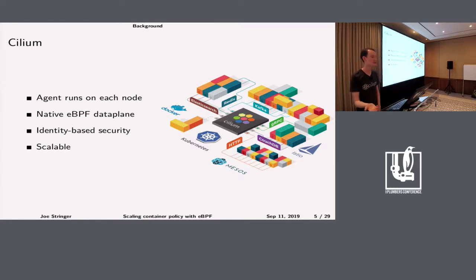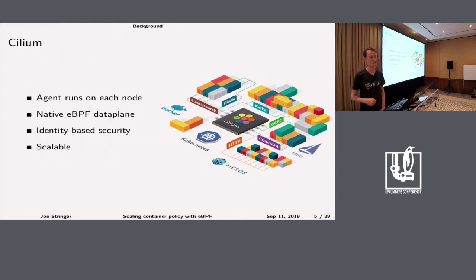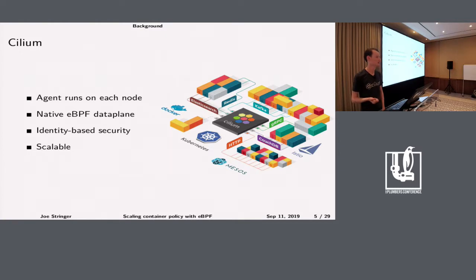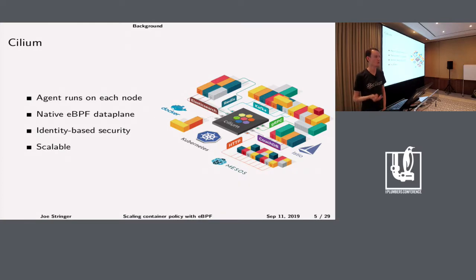Cilium is an agent that runs on each node in the cluster. It's a heavy user of eBPF, but also does a lot of configuration of other aspects of the Linux stack. One of the key points of Cilium is identity-based security using the labels of pods on containers. One of the key goals is also to be scalable — a lot of other networking plugins do pretty naive things when it comes to configuring the kernel, such as configuring a lot of iptables rules for services. We want to avoid those mistakes.